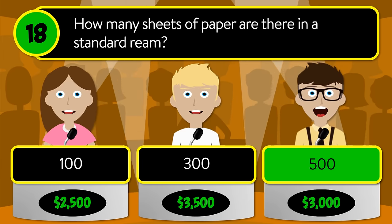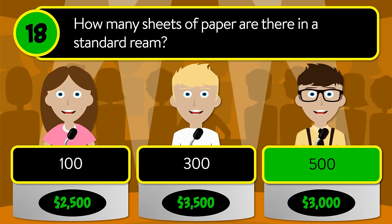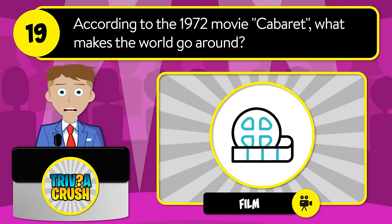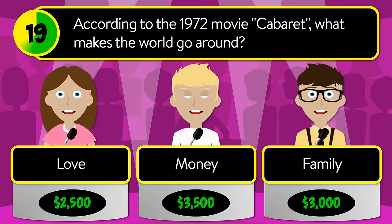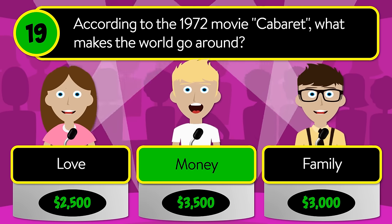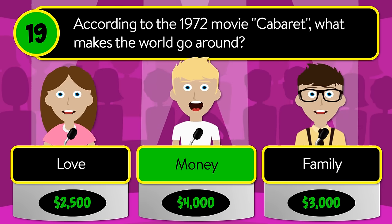The correct answer is 500. Question number nineteen: according to the 1972 movie Cabaret, what makes the world go round? Is it love, money, or family? The correct answer is money.